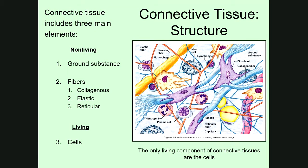I want to start with the fibers, because they are quite easy to see on this diagram. You'll notice these long, stringy fibers running or scattered through the tissue. This first one is known as a collagenous fiber. These are the biggest fibers found in connective tissue. They're made out of a protein known as collagen, which is incredibly strong — actually stronger than steel of the same size. Because it's so strong, collagen tends to make connective tissues really strong and capable of binding structures together.